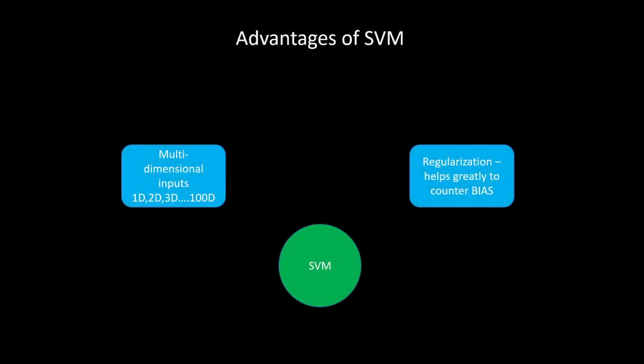Let's talk about some advantages of an SVM. The two main ones are: first, we can have multi-dimensional inputs — we can go from 1D to 2D to 3D, even beyond 100 dimensions. Second, regularization helps greatly to counter our bias. A lot of times with our data we can get bias in there, but an SVM actually helps out quite a bit addressing bias. Those are the two main advantages.